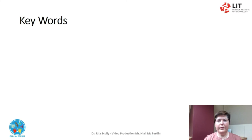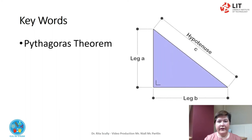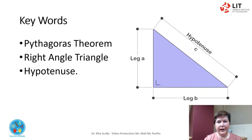There are some key words that we use in this video. The Pythagoras Theorem provides the relationship between the sides of a right-angled triangle. A right-angled triangle consists of two legs and a hypotenuse. The two legs must meet at 90 degrees, or a right angle. The hypotenuse is the longest side in a right-angled triangle and it is opposite the right angle.